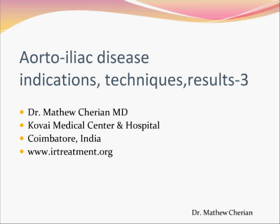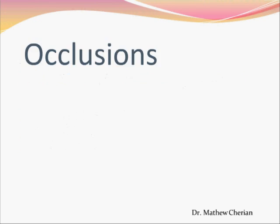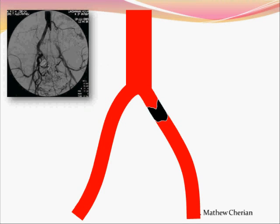In occlusion, the key thing is learning to cross these lesions. You can either go from an antegrade approach or from a retrograde approach. You'll have a wire like a Simmons wire across the bifurcation, or you may have just the tip of the catheter at the occlusion.